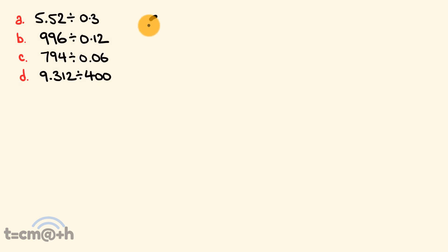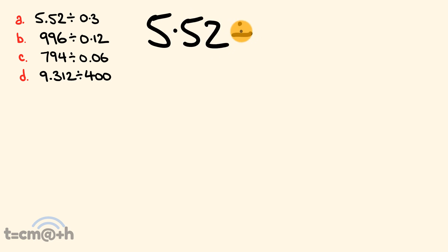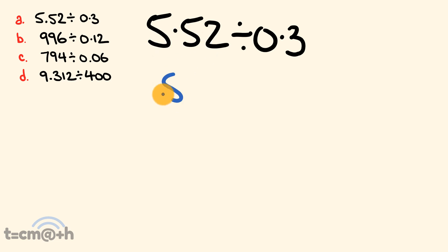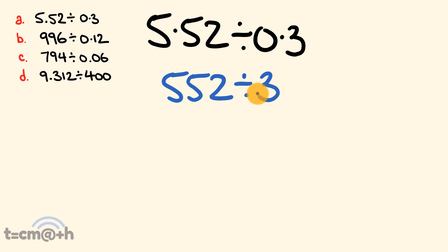Let's get to the first example. We have 5.52 divided by 0.3. The first trick to dividing with decimals is we are going to ignore the decimals — we're going to treat these numbers like there were no decimals. So we're going to treat 5.52 like 552 and divide that by just 3, then work out the decimals at the end.